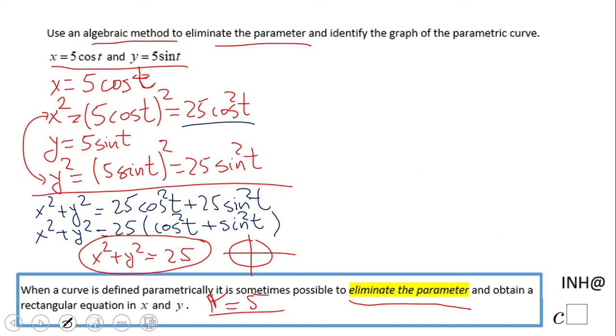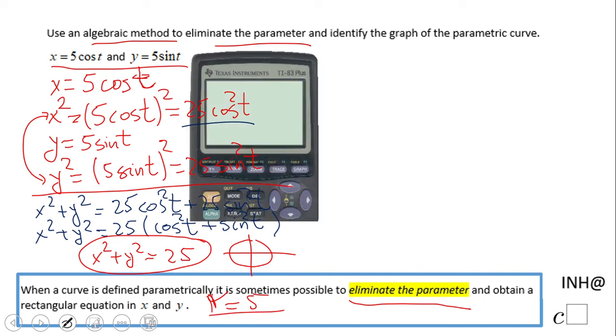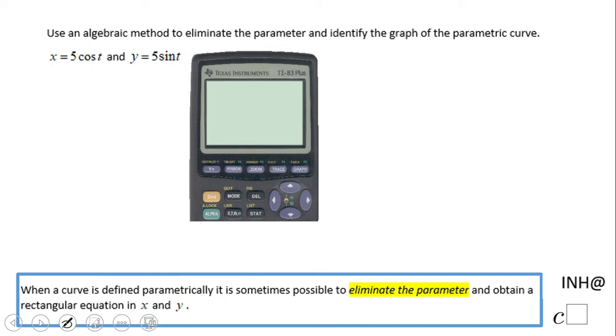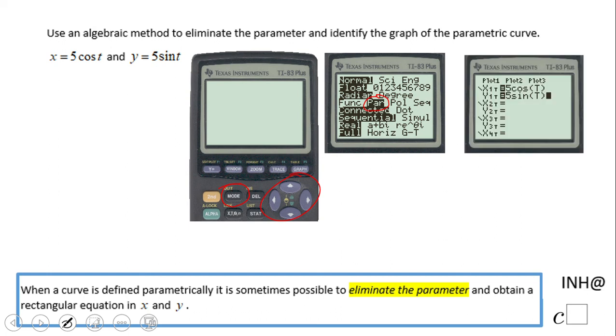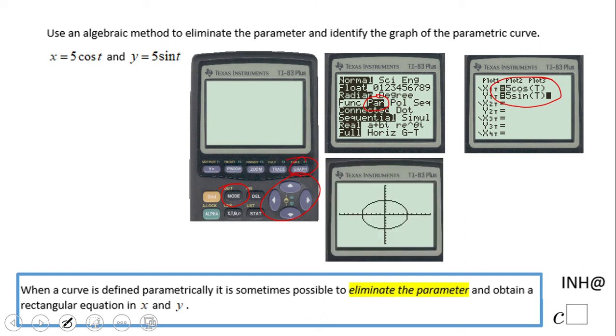Let's see a little bit on the graphing calculator. Don't forget to click the mode button and change your calculator to parametric mode using the keyboard. And don't forget to click enter. Then you're going to type in the two equations, and then you press the graph button and you get this.